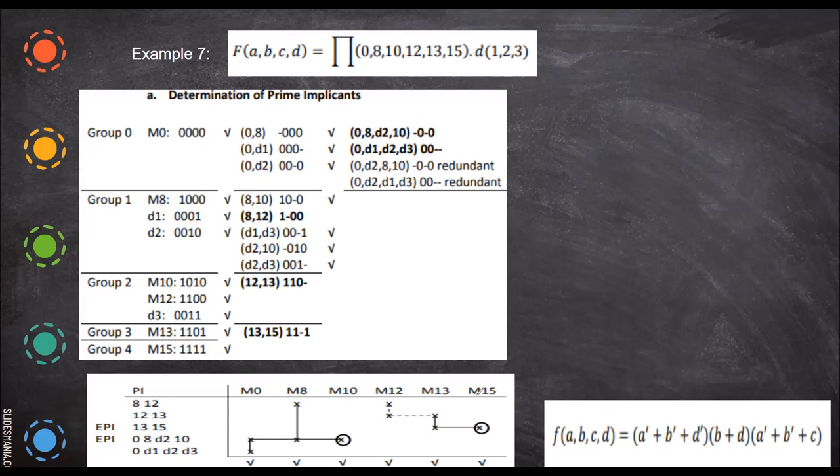Now you form the essential prime implicant table. So write down the max terms. There is no need to include the don't care conditions here. Now, you write the combinations, 8 and 12, so you mark 8 and 12. Then 12, we have 12, 13, so mark 12 and 13. And 13, 15, like twice. Then find the one which has a single mark. So this one and this one.